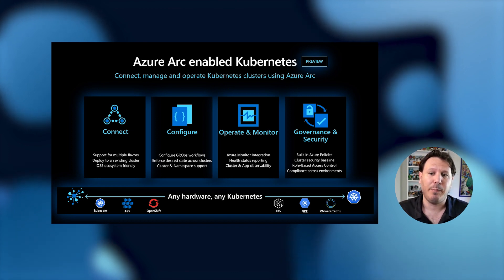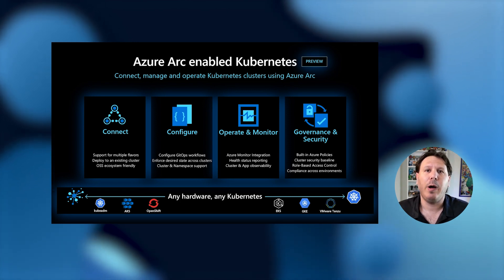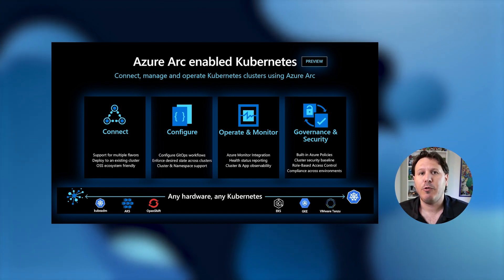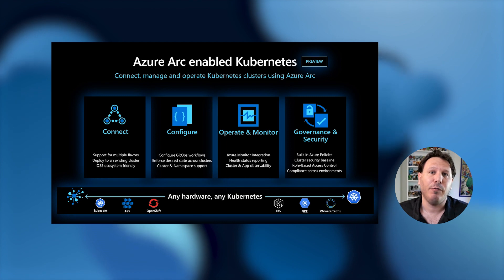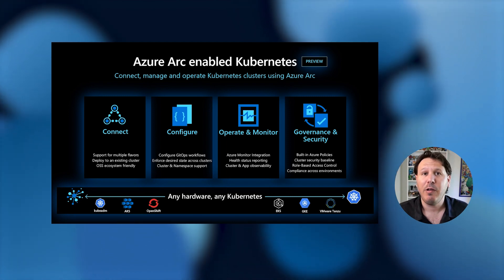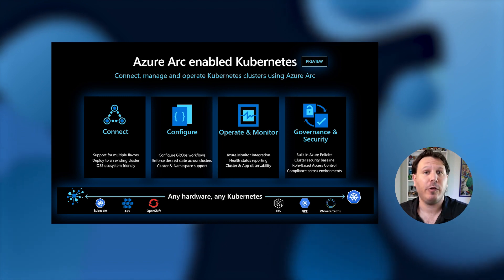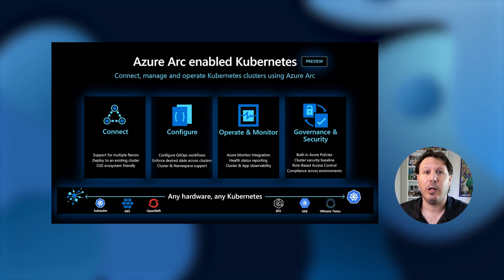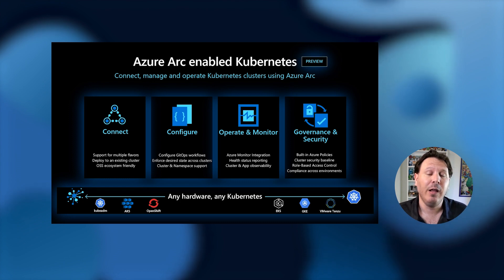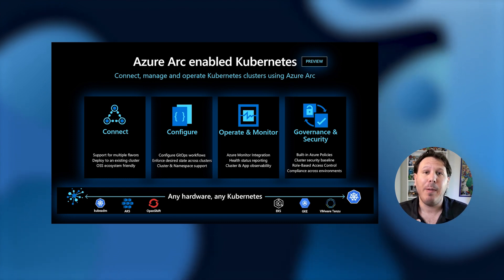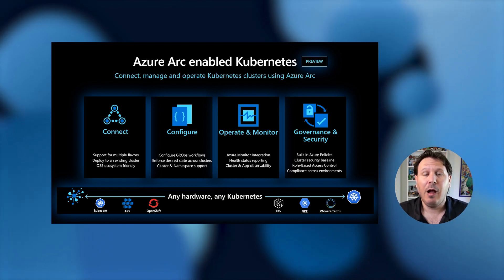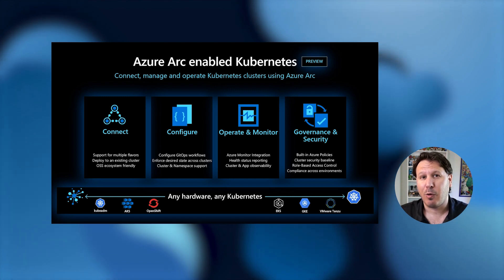The fourth thing is about governance and security. By bringing all these clusters into Azure Arc-enabled Kubernetes, we want to make sure that you have a way to keep a baseline for those clusters. We want to leverage Azure Policy, for example, to make sure that you are using trusted container registries, or making sure that you have ingress controllers deployed on all of your clusters in a standardized baseline. We also want to make sure that you have role-based access capabilities coming from Azure Active Directory applied on those clusters. These are the four bullets that really highlight the value proposition of Azure Arc-enabled Kubernetes.